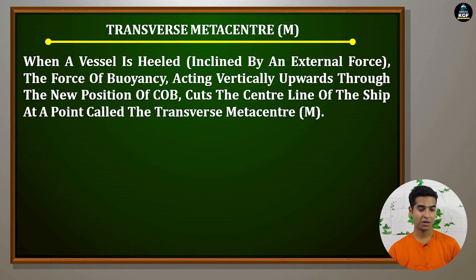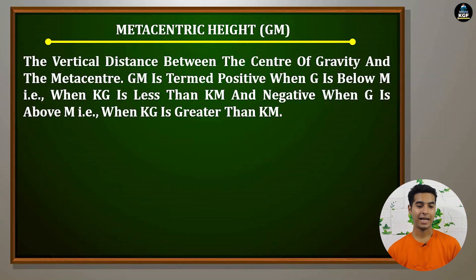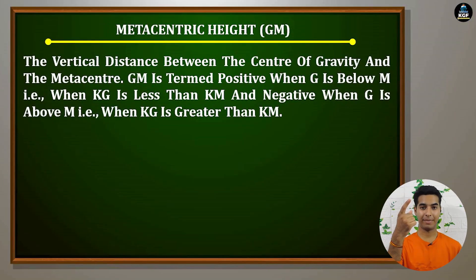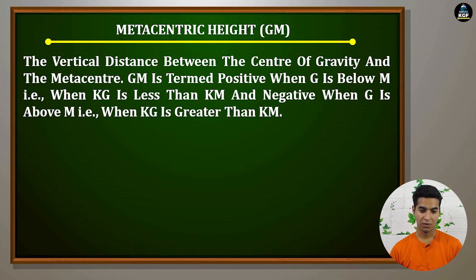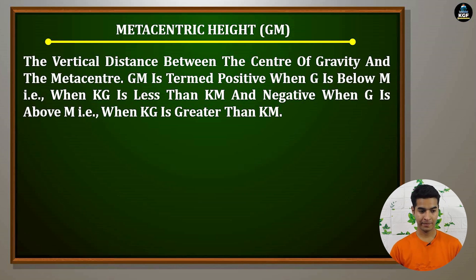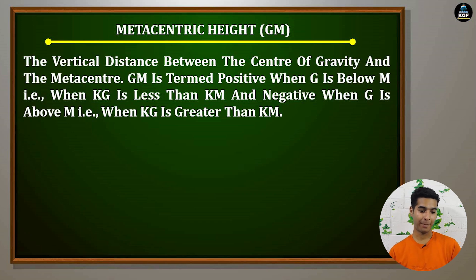Check the description for the diagram of each topic. Metacentric height: this is the height between G (gravity) and the transverse metacenter M. The vertical distance between the center of gravity and the metacenter — GM — is termed positive when G is below M, that is when KG is less than KM, and negative when G is above M, that is when KG is greater than KM.